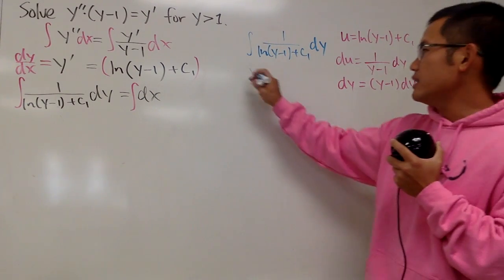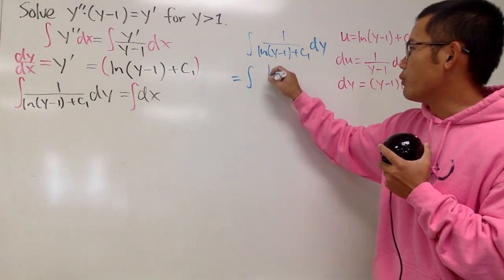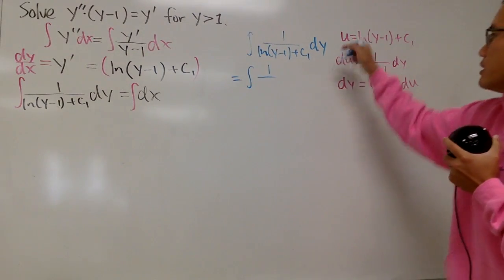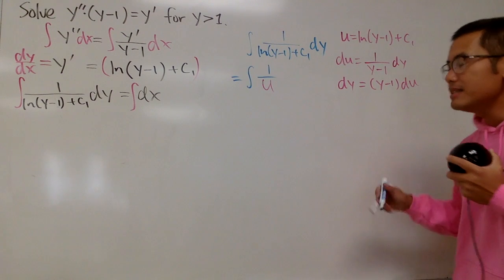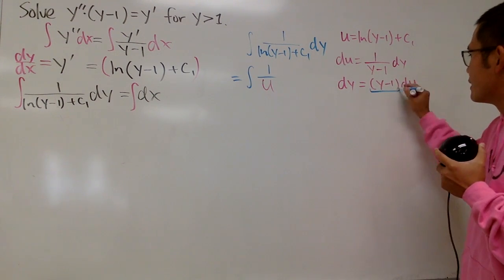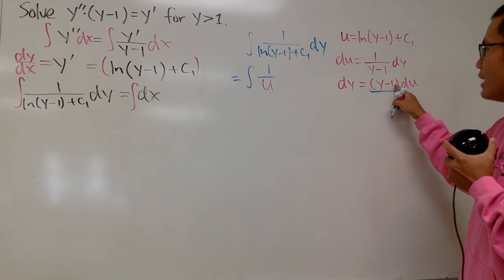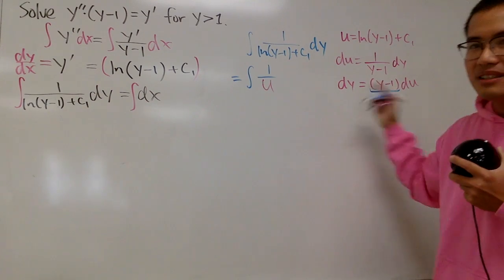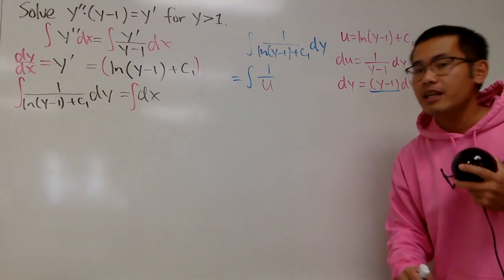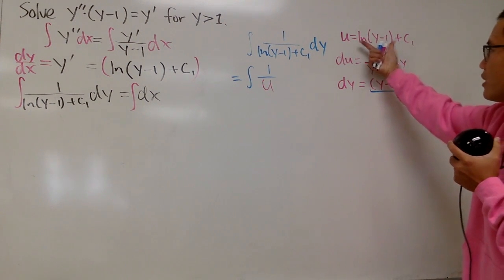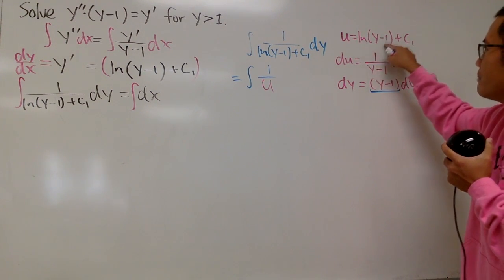Very good. And now, take this integral to the u world, we get the integral of 1 over this whole thing, it's just the u, and the dy is all this. But, it seems like the y-1, the y right here, it's not in the u world. There's nothing we can cancel out. But it's okay, because we can just look back here and isolate the y-1.